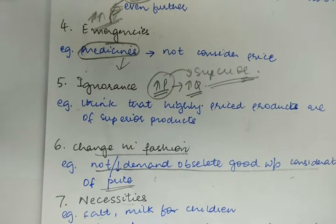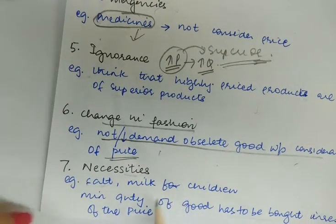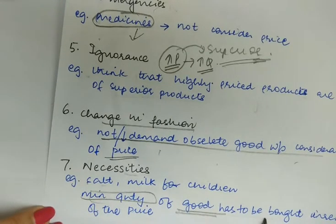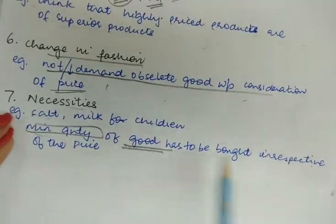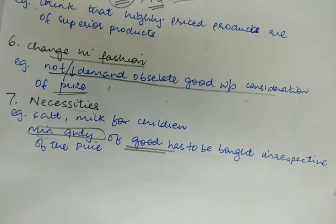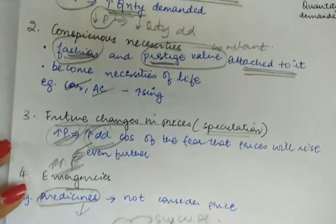The seventh case can be of necessity. The law of demand is not seen operating in the case of necessities such as food grains, salt, matches, and milk for children. A certain minimum quantity of these commodities has to be bought irrespective of how low or high the price is. Irrespective of the price, you will have to buy a certain amount of salt because they are the necessities of life. In these seven conditions or situations, the law of demand does not function.